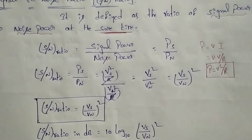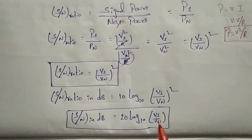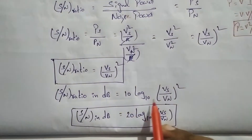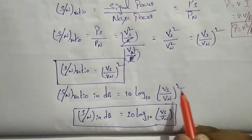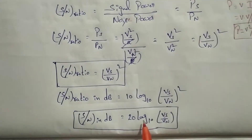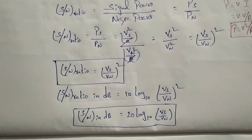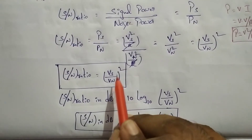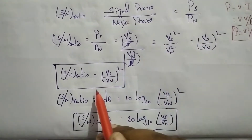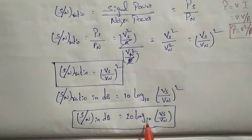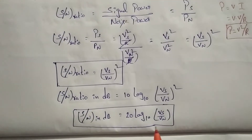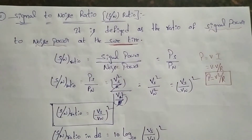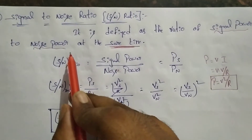In case we express in dB, the signal-to-noise ratio in dB is 10 log10 of Vs over Vn whole squared, which equals 20 log10 of Vs over Vn. So the signal-to-noise ratio is Vs over Vn whole squared, and in dB it is 20 log10 of Vs over Vn. Signal-to-noise ratio is defined as the ratio of signal power to noise power.